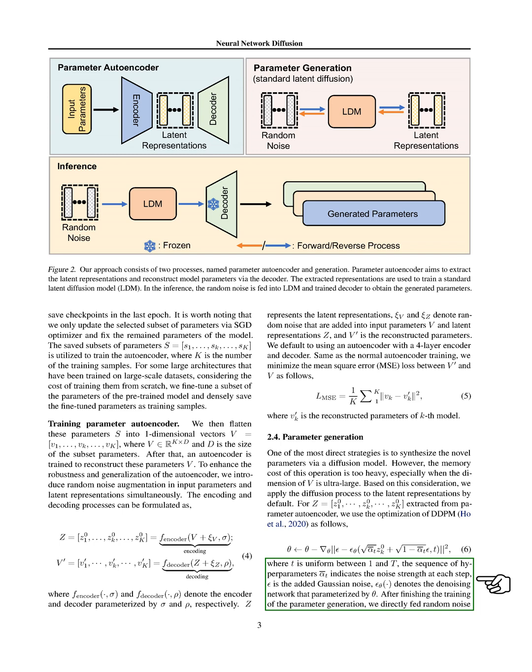In this process, we introduce noise step-by-step, where the amount of noise introduced at each step is controlled by a sequence of hyperparameters. The noise is Gaussian, and we use a special network to gradually remove this noise.